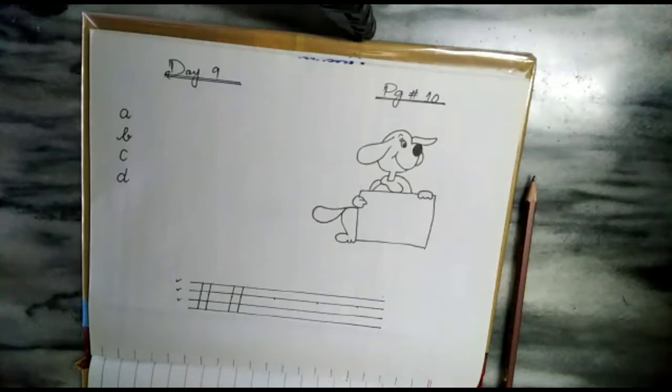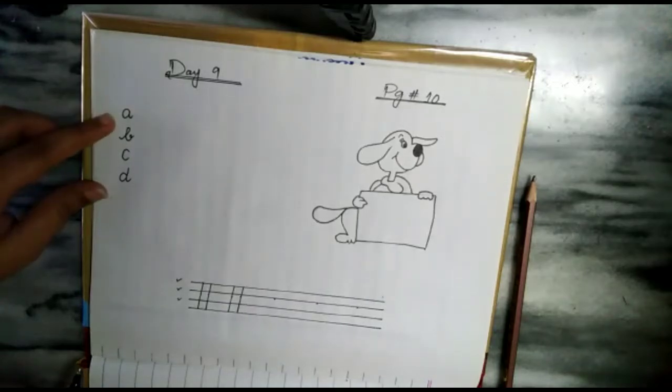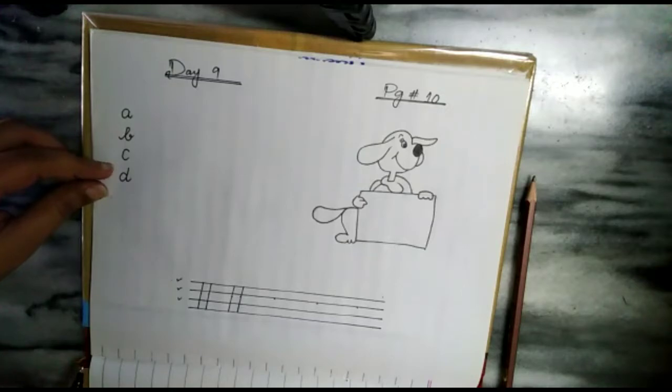We will revise our alphabet. First, we will be A. What comes after A? B. What comes after B? DA. What comes after DA?